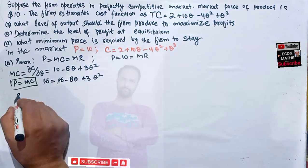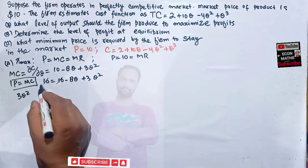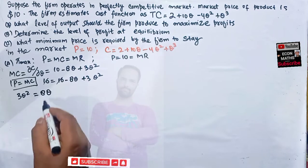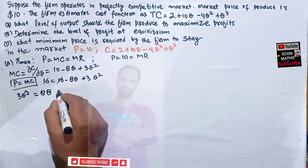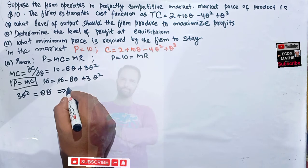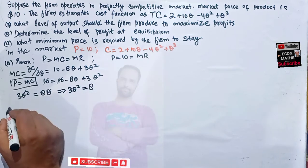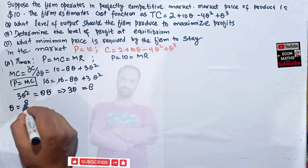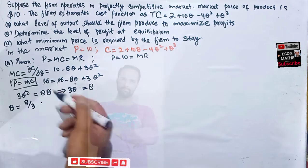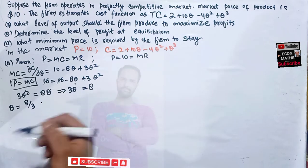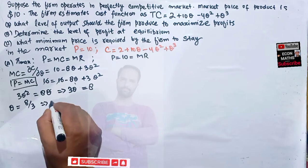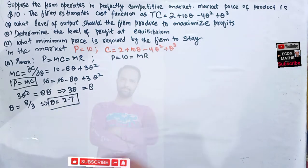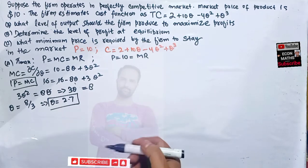The 10s cancel, so transposing we get 3Q squared minus 8Q equals 0. Factoring out Q gives us 3Q equals 8, so Q equals 8/3, which in decimals is approximately 2.7. This is the profit-maximizing level of output the firm should produce.